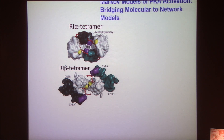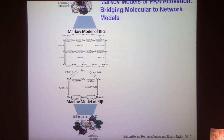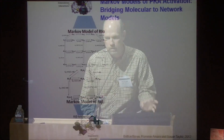The different holoenzymes have different tetrameric structures. For example, R1-alpha brings the two catalytic subunits close together, facilitating cooperative interactions between those RC heterodimers. Whereas the R1-beta tetramer has catalytic subunits at the end of a more elongated holoenzyme, limiting the potential for cooperative interactions between the C subunits. We reflect these structural differences in Markov models — thermodynamic, not kinetic models — of these different PKA isoforms, and we've used biochemical experiments, many done in Susan Taylor's lab, to parameterize them.